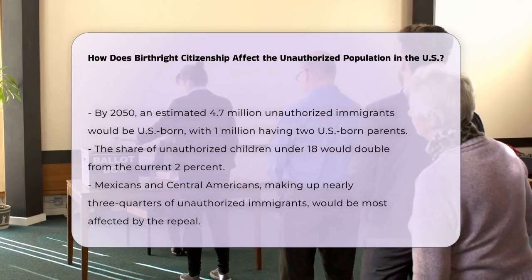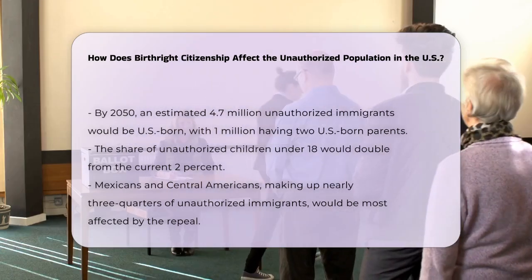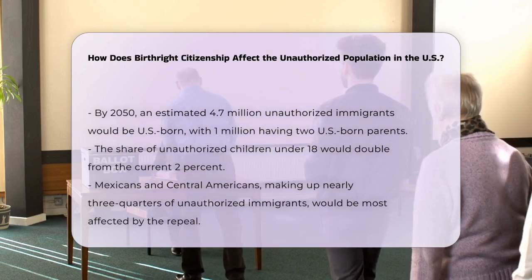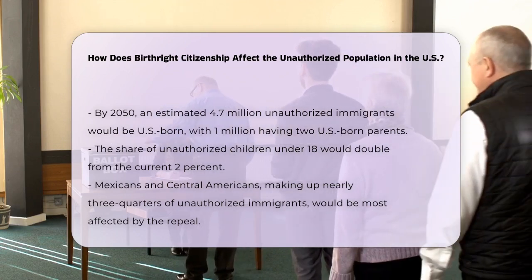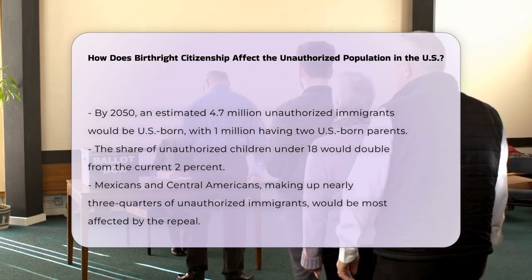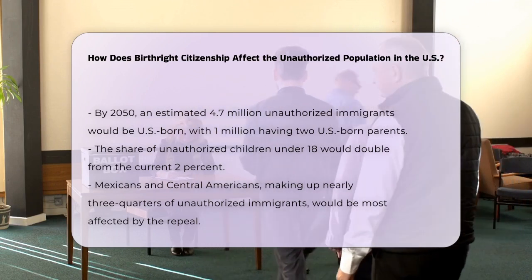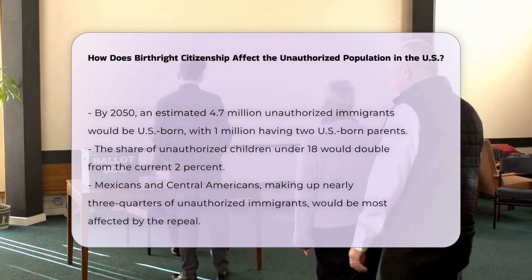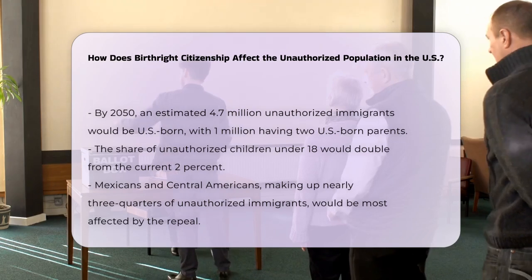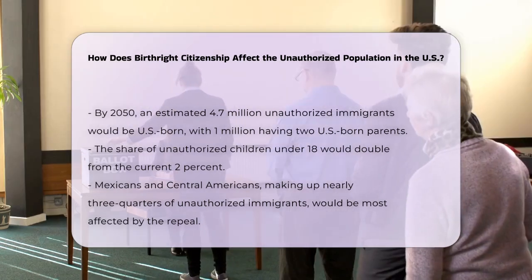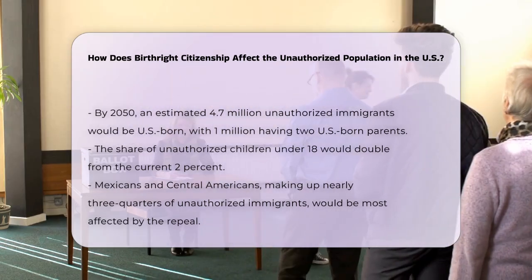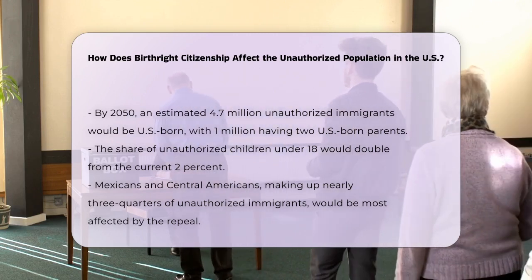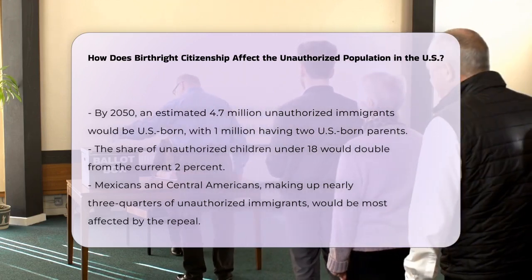Mexicans and Central Americans, who account for nearly three-quarters of all unauthorized immigrants, would be the hardest hit by such a change. This demographic impact is significant, as it would exclude these individuals from social membership and basic services for generations. Repealing birthright citizenship would not only increase the unauthorized population, but also create a new permanent underclass. Children born to unauthorized immigrants would be left without citizenship or nationality, potentially rendering them stateless and vulnerable to exploitation and abuse.